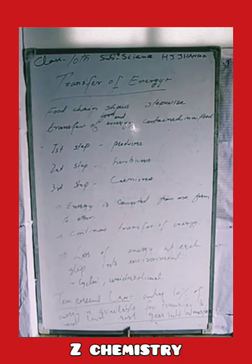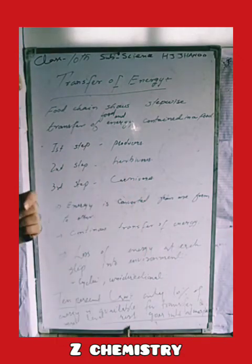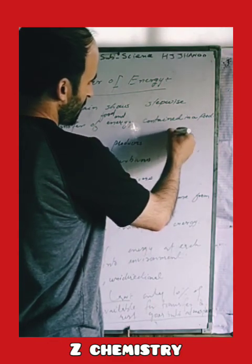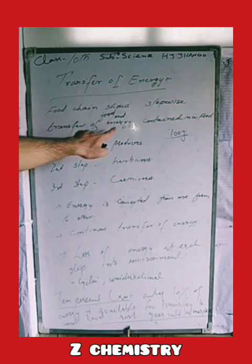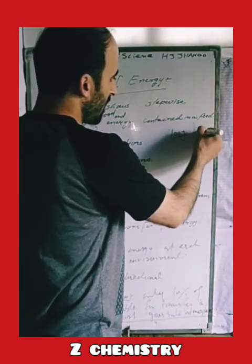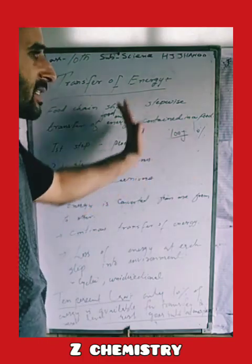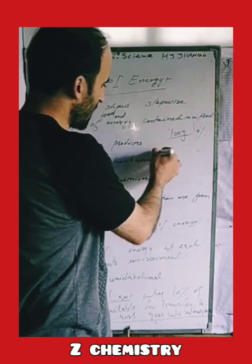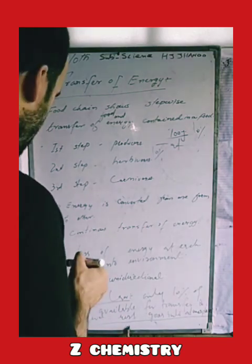In the ecosystem, energy flow follows a law called the 10% law. When one organism consumes another organism, only 10% of the energy is transferred. For example, if the sun provides 100 joules to a plant, the plant only uses 10 joules. When a producer is eaten by a carnivore, again only 10% of the energy is passed on. The rest — 90% — is lost to the atmosphere as heat. Only 10% of the energy is available for transfer to the next level.